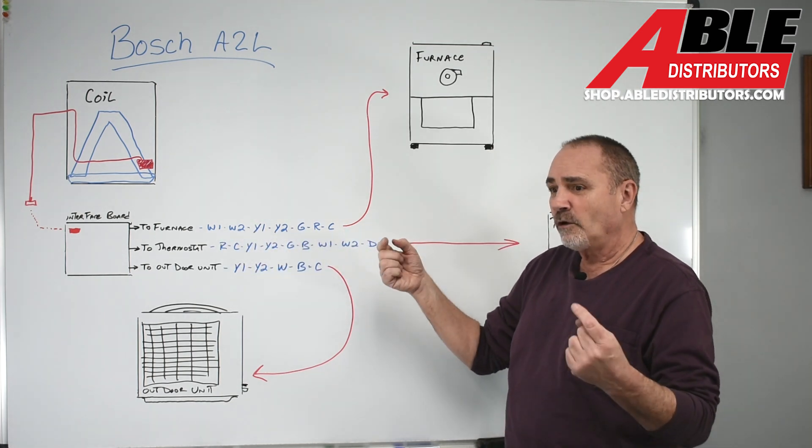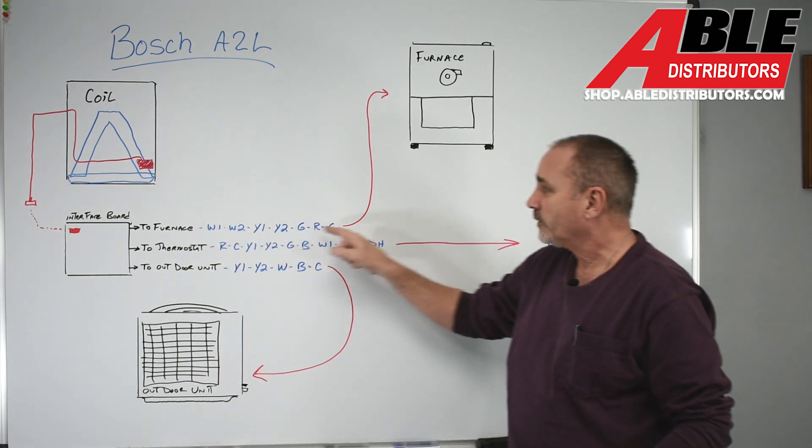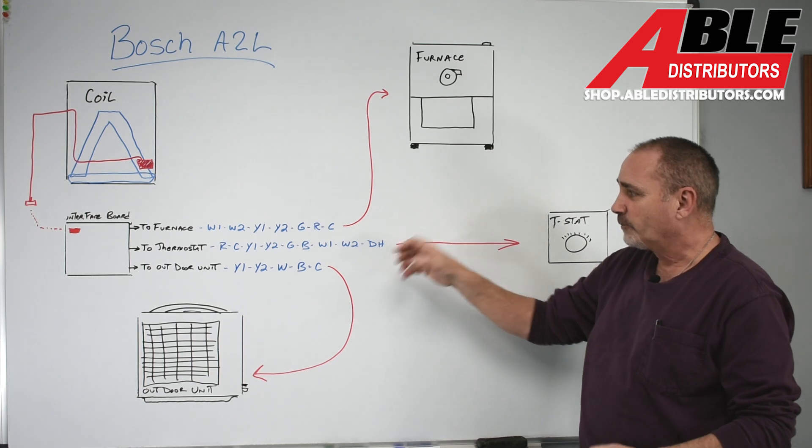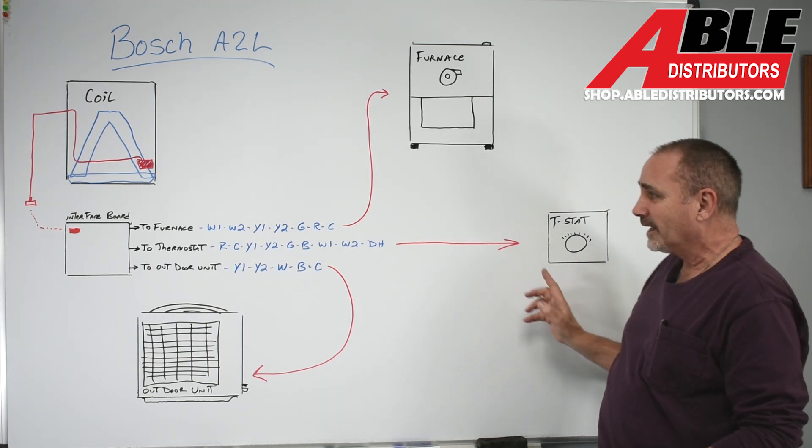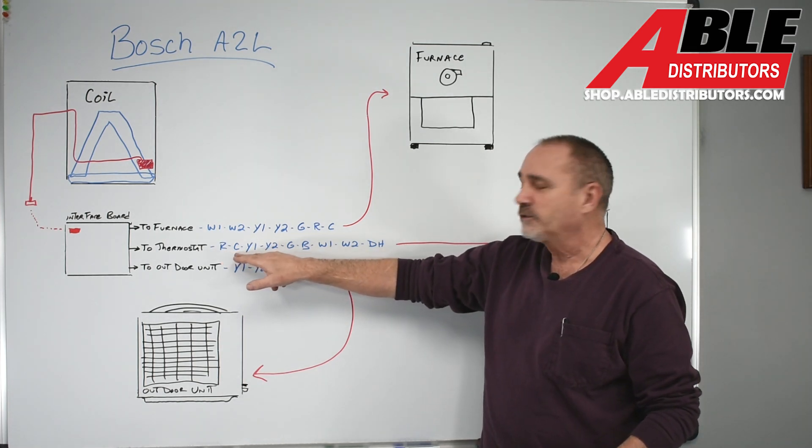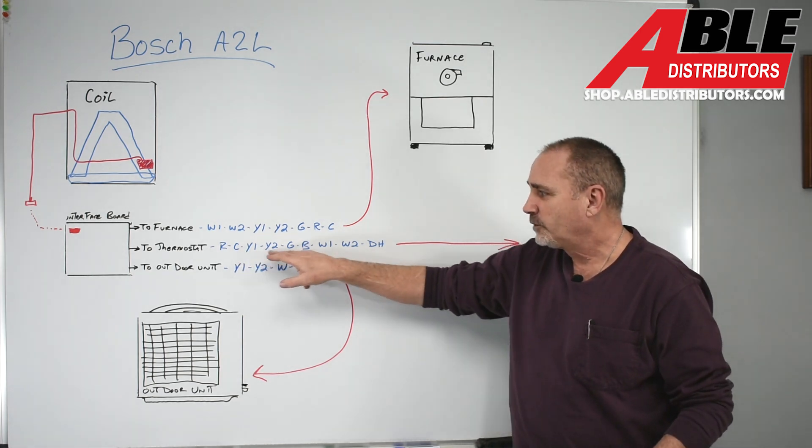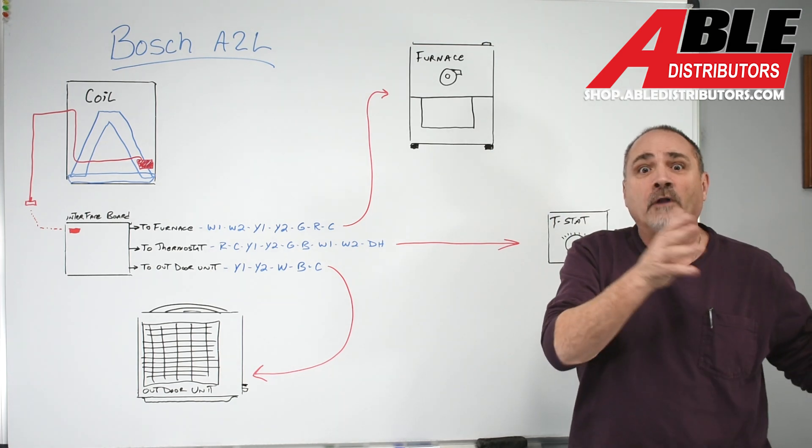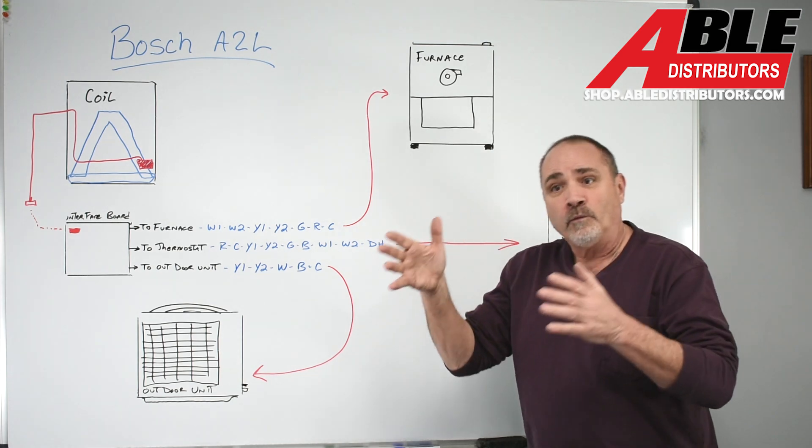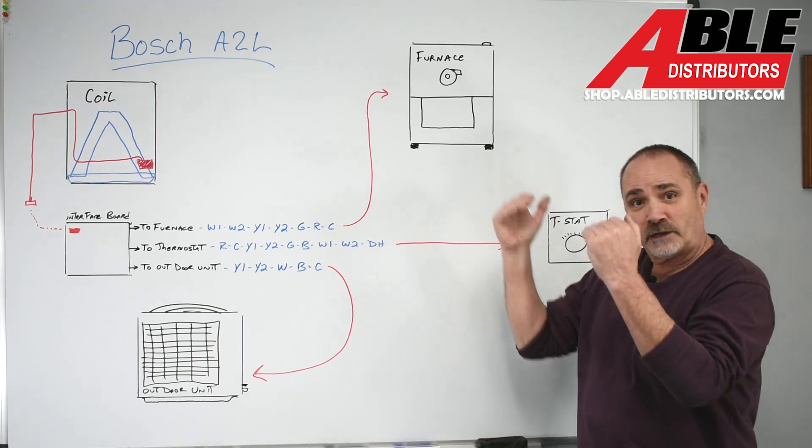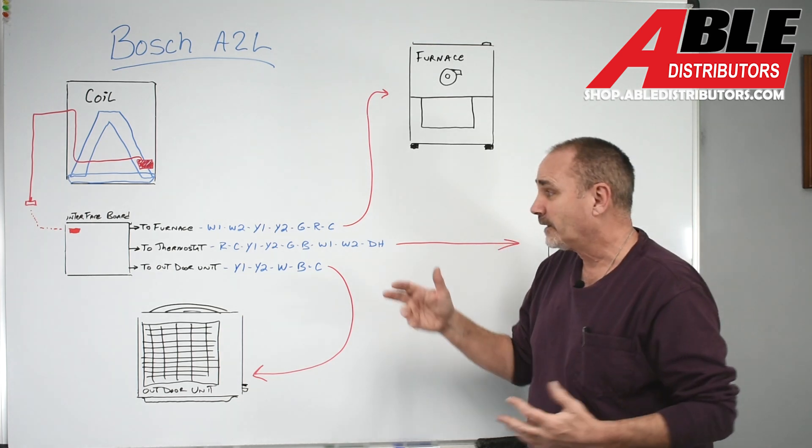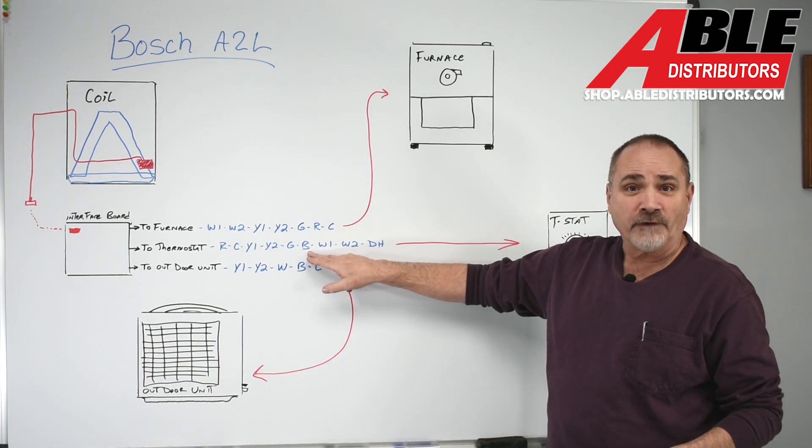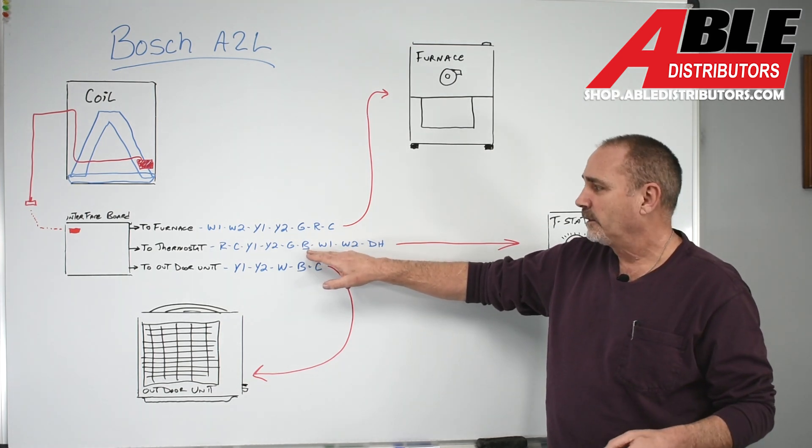There is no intermingling of the wires. One group of wires goes to the furnace. Forgive my drawing. One group of wires, and they're separate, goes to the thermostat. Again, the thermostat, you're going to use R. You're going to use common if you've got a Wi-Fi thermostat. You're going to choose whether you've got a Y1, Y2 thermostat. Again, the Bosch will move along with you. So whether you want the two stage and the Bosch will modulate and follow behind or not, that's up to you. Green, you're going to need that. Blue, or your reversing valve, again on Bosch, that's on heat. You're going to need that.